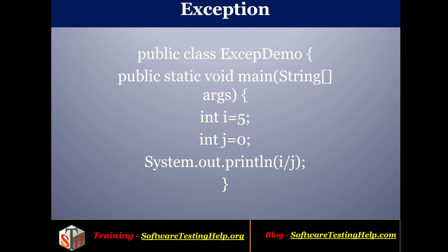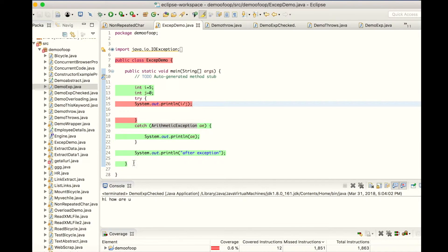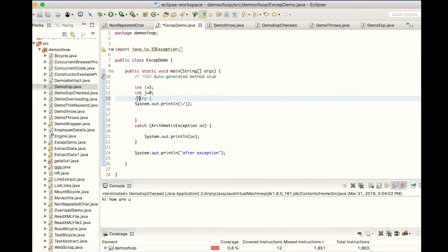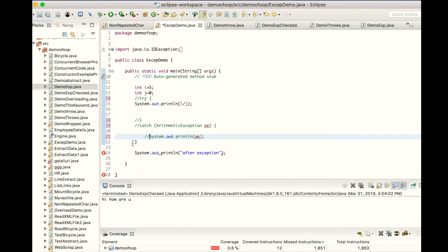Let us see an example. Here I have a demo class which has the main method, and inside the main method I have declared variables int i and j. I'm going to divide i by j — five divided by zero — so this is going to give some exception. Let us see how the compiler will react. First I will show without exception handling how the system is going to react, so I'm commenting out the try-catch block.